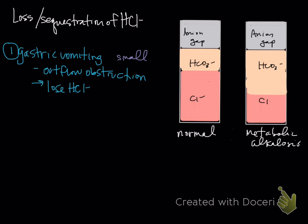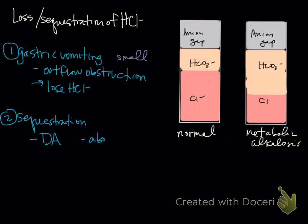In large animals, it's a little bit different, and we mostly talk about sequestration — some people call this internal vomiting. In cattle, we see a couple things cause this: displaced abomasum (DAs) and abomasal atony.